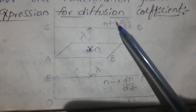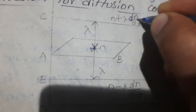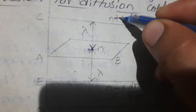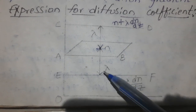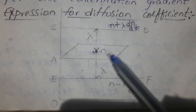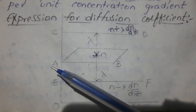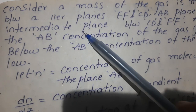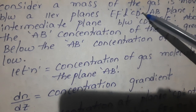For small molecules moving randomly, we have the expression n plus lambda into dn by dz, where dn by dz is the concentration gradient.